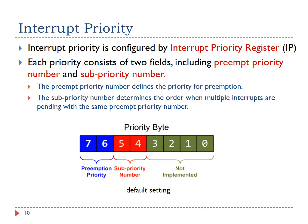ARM Cortex-M processors use a byte to represent the priority level, allowing a maximum of 256 different priority levels ranging from 0 to 255. However, the actual number of available priority levels depends on the manufacturer. For example, STM32L4 processors implement 4 priority bits placed as the most significant bits of the priority byte, supporting up to 16 interrupt priority levels. The priority bits are divided into two parts: preemption priority and sub-priority. By default, preemption priority uses the upper two bits and sub-priority uses the lower two bits, but this is configurable.